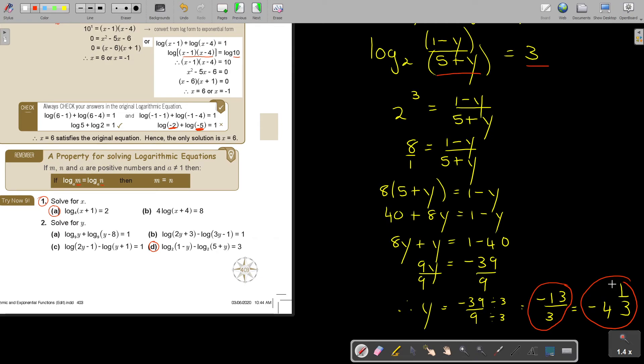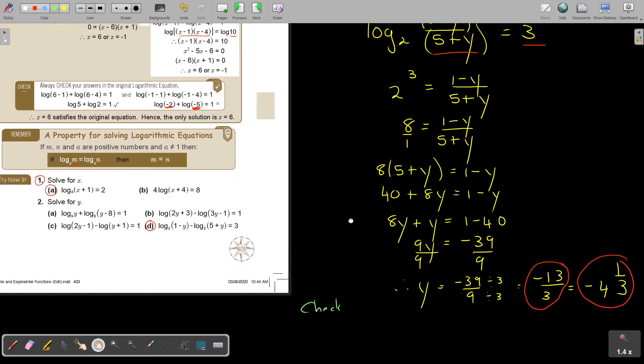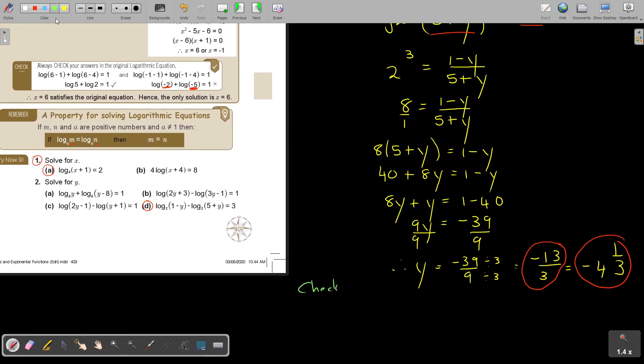But now, I still have to do the check. Don't forget your check. Always. So, let's do the check. And I'm going to put it in the original one. So, I'm going to say log 2. 1. Sorry. I'm not writing correctly. 1 minus minus 4 and a third.